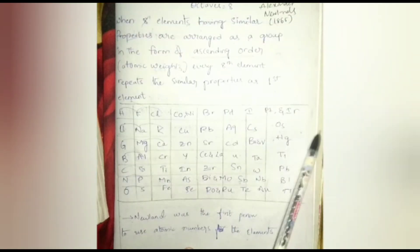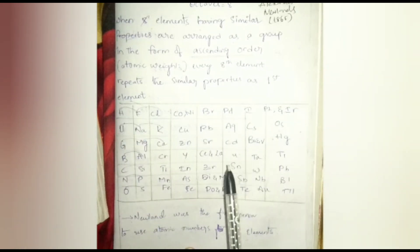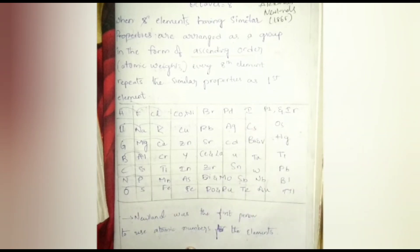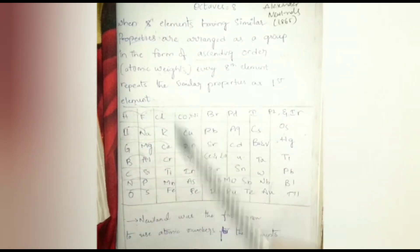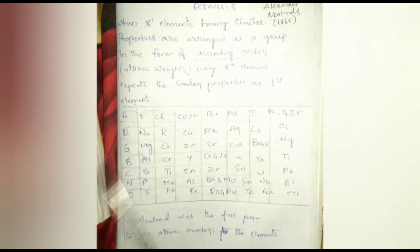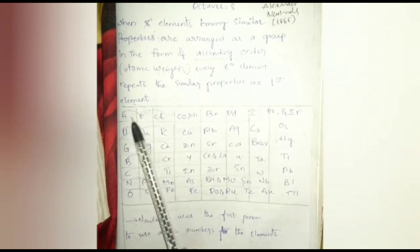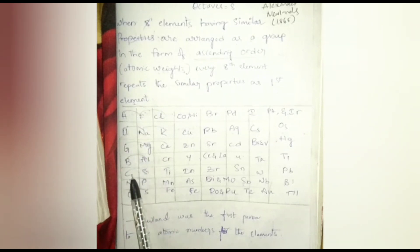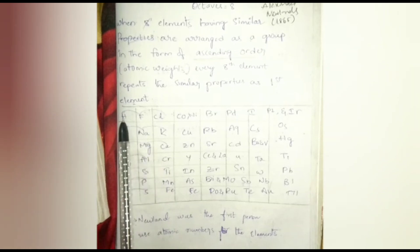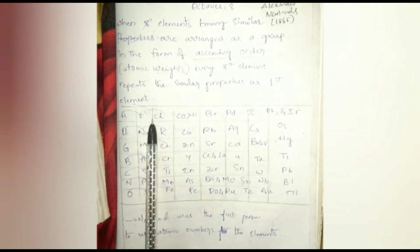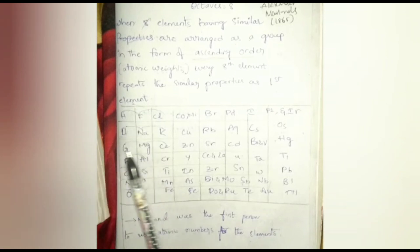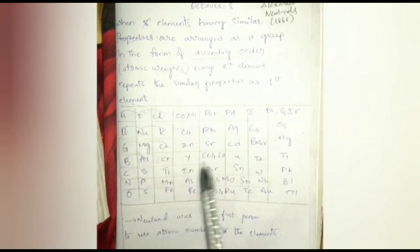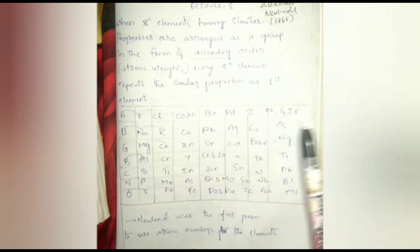Here I am showing the table of the Law of Octaves to explain how every eighth element repeats the similar properties as the first element. For example, Hydrogen: when you count one, two, three, four, five, six, seven, eight — this eighth element, Fluorine, shows similar properties to Hydrogen. The relationship was just like every eighth note that resembles the first in octaves of music.